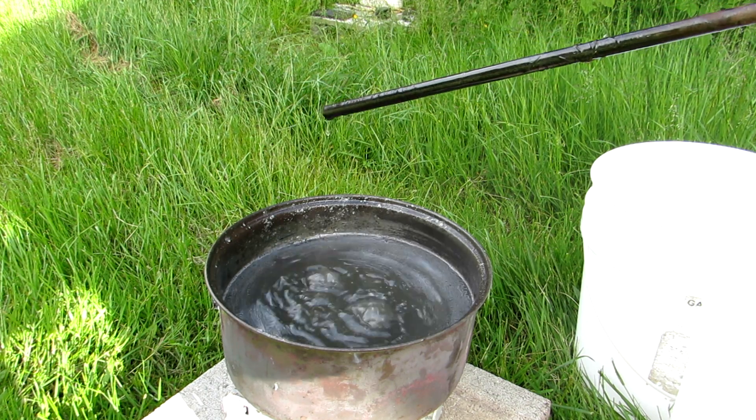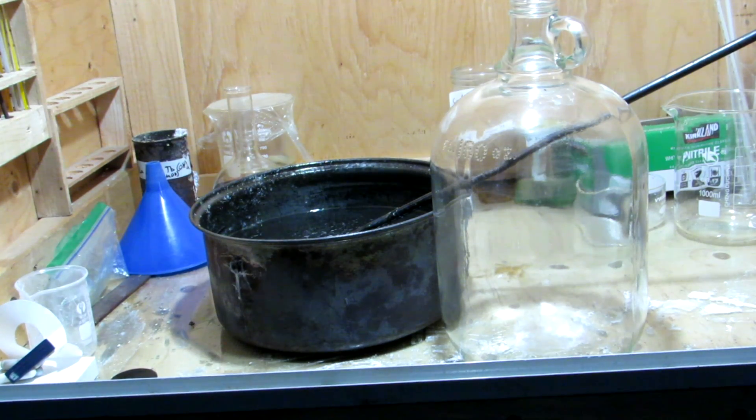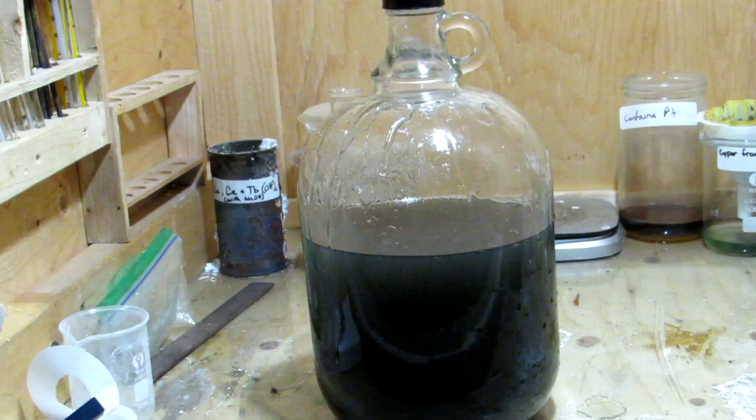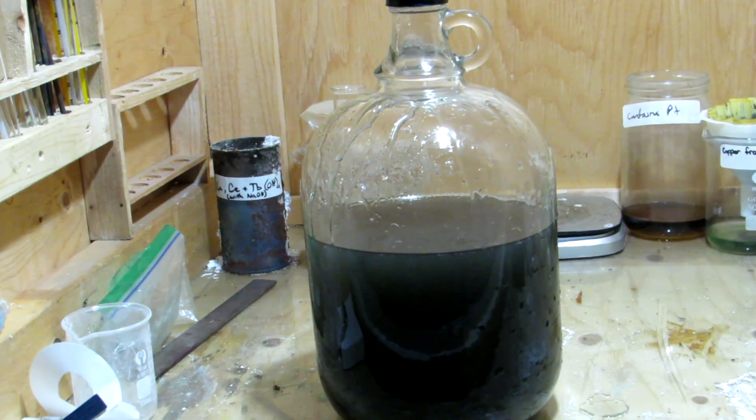Once cooled, the mixture is even more viscous. It can then be added to a large jug for storage. The solution is dark due to impurities from the pottery grade silicon dioxide. However, this is not an issue for the purposes of making refractory materials.